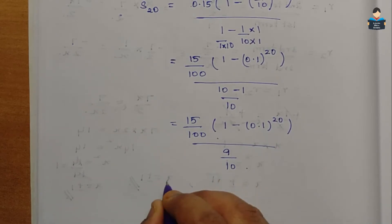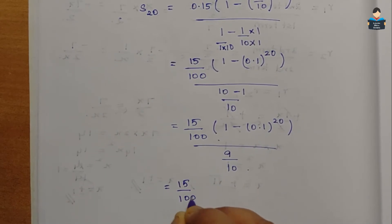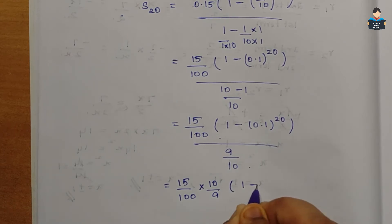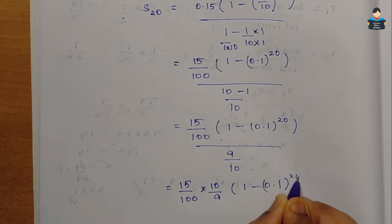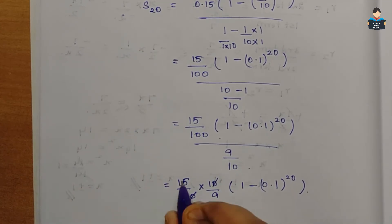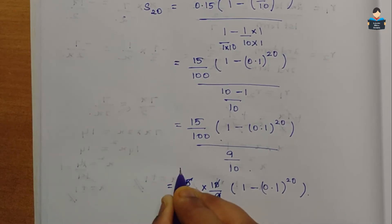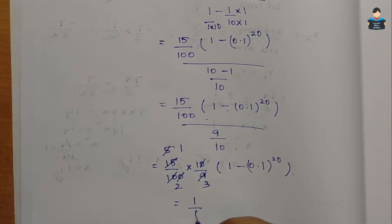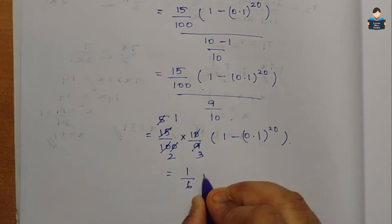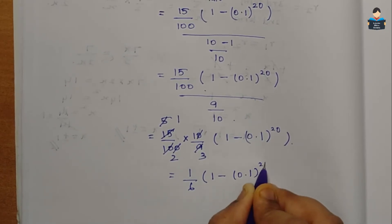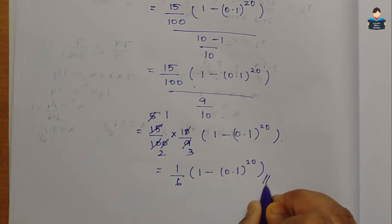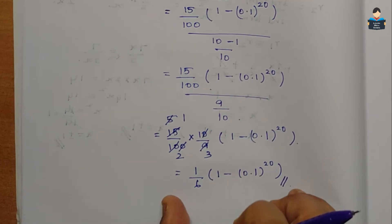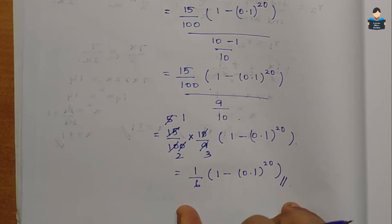Simplifying the numerator: 15/100 × 10/9. Cancelling common factors — 15 = 3×5, 100 = 4×25, cross-cancelling gives 1/6. So the final answer is S₂₀ = (1/6) × (1 − (0.1)^20).